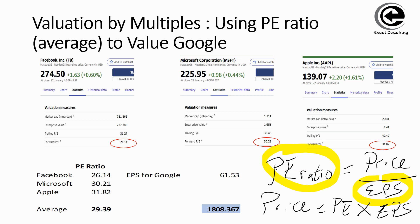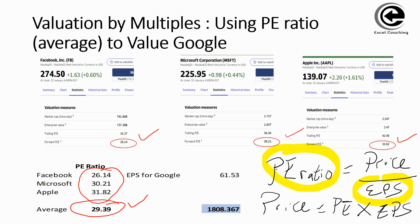Who are some of the competitors for Google? There's Facebook, Microsoft, and Apple. In this particular case, let's use three companies — though you could use four, five, or as many as you want, as long as they are comparable, have similar risks, and are in similar industries. We'll look at the PE ratio for these three companies: Facebook is 26.14, Microsoft is 30.21, and Apple is 31.82. We'll aggregate all three and work out an average PE ratio for that industry group. So 26.14 plus 30.21 plus 31.82 divided by 3 gives an average of 29.39.